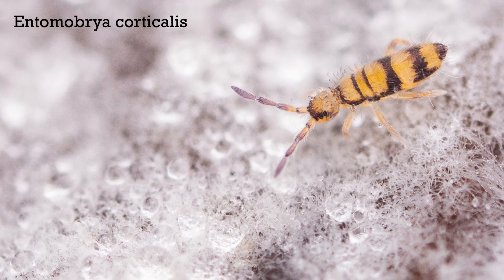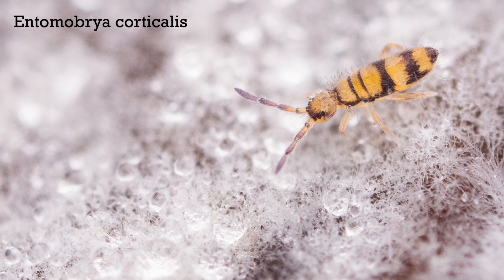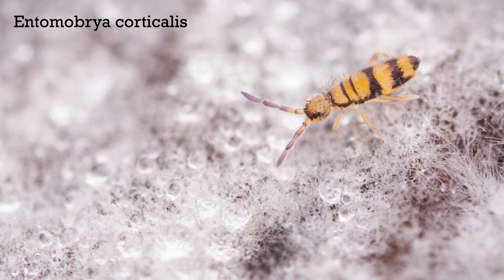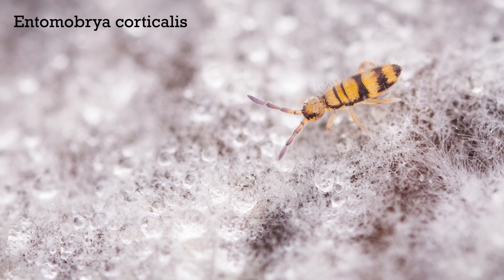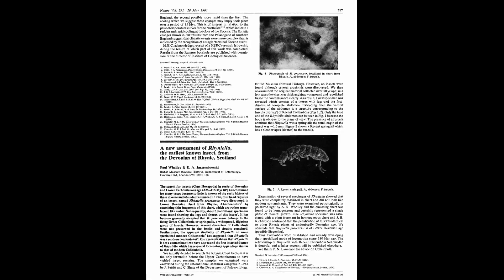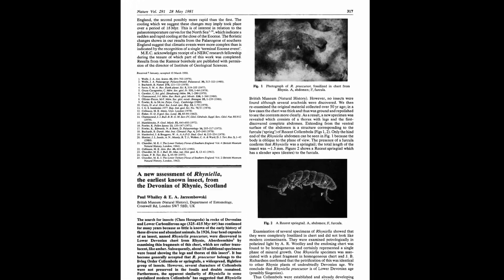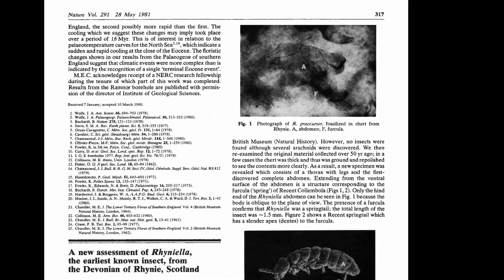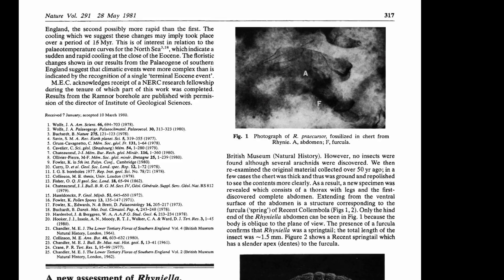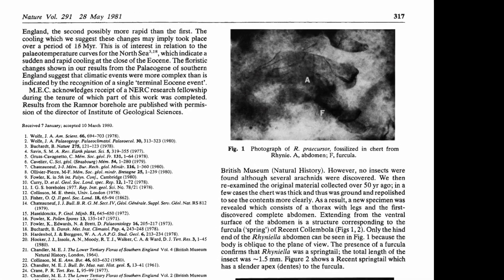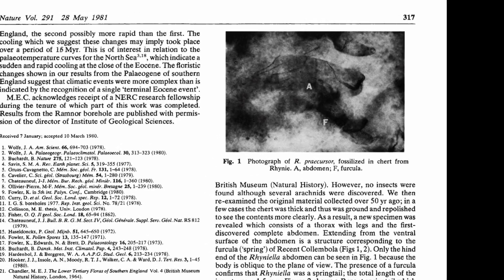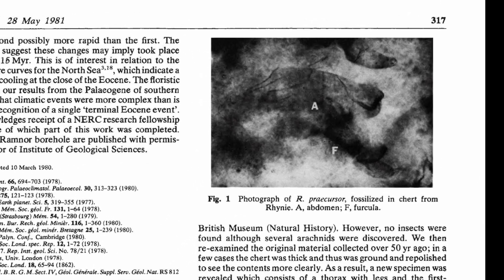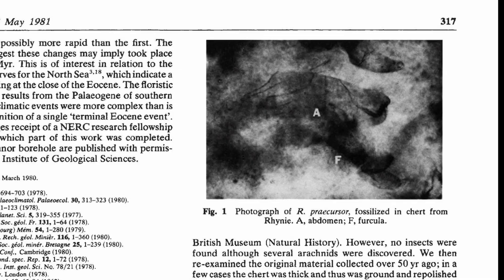Springtails can be found on every continent, including Antarctica, and can adapt to all kinds of different, very extreme habitats. The oldest known springtail is a fossil from the early Devonian period, around 380 million years ago, and that makes it one of the first known fossils of land-dwelling animals.